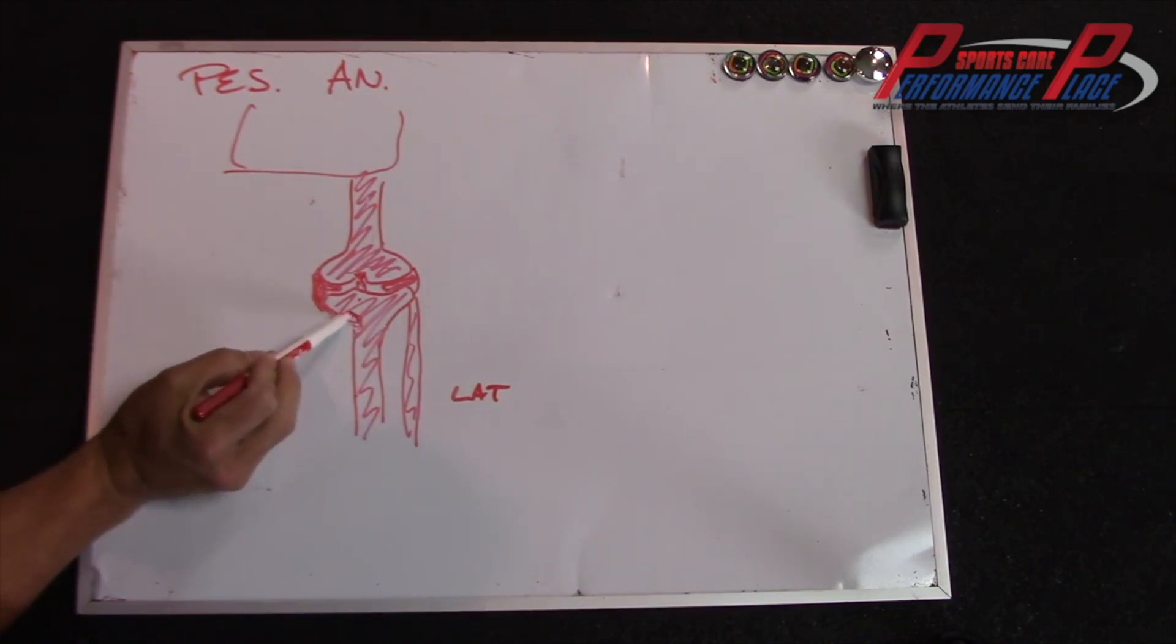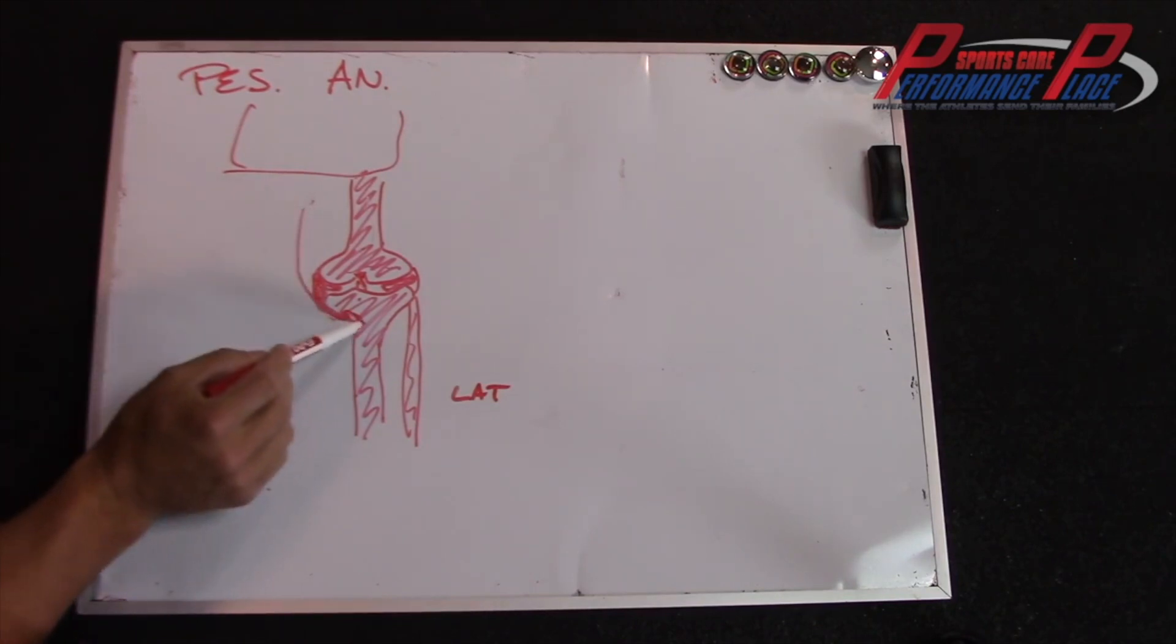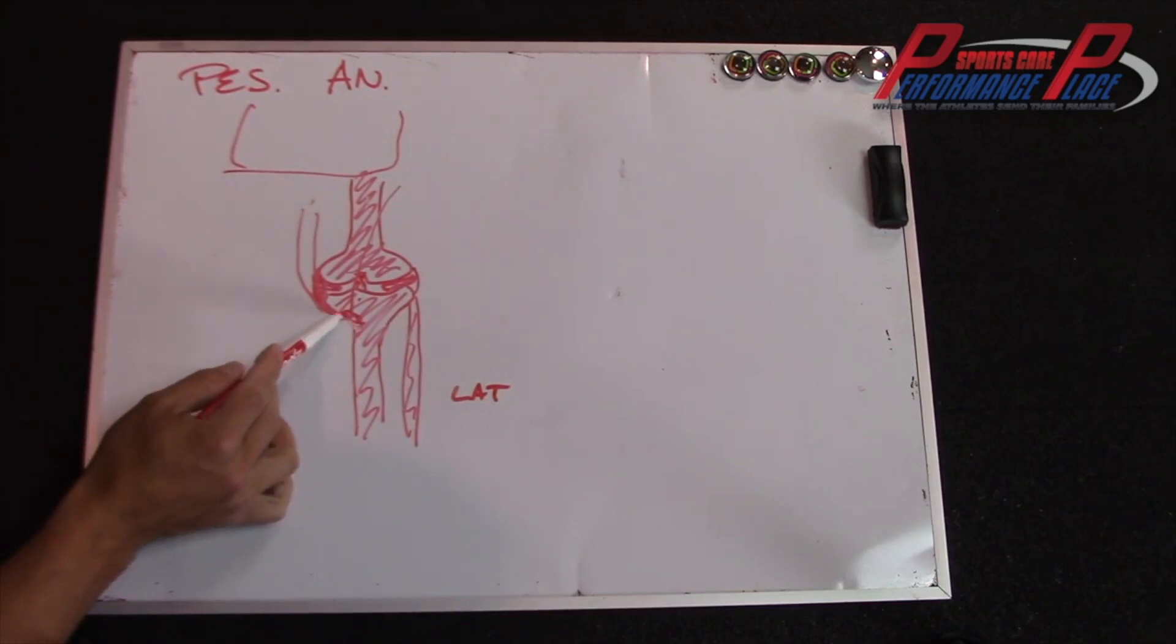So basically what happens is when there's a gutter like this and it starts to ooze out and down and it comes down the capsule, the pes anserinus is like right here. And now we do have three muscles attaching to it. And there's the bursa right there as well. But look how close this gutter happens.